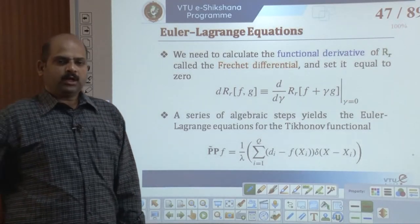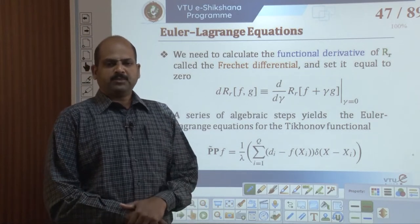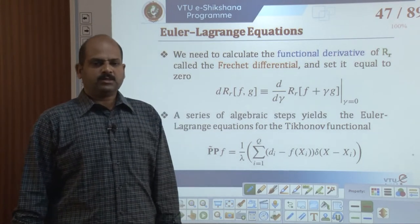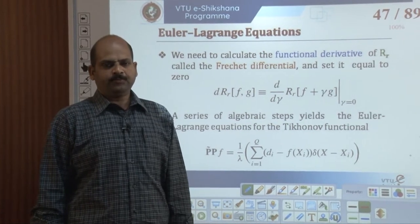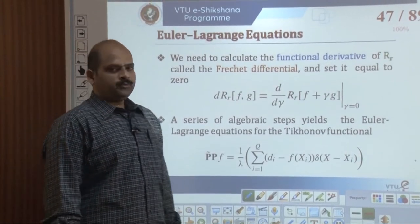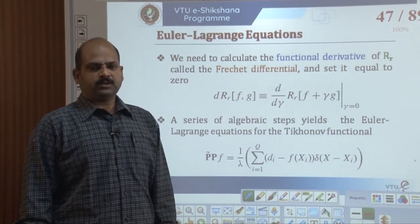Welcome to VTU E-Sectioner E-Learning Centre. In this video, we are going to see the continuation of module number 3 of artificial neural network. In yesterday's class, we came across the Euler-Lagrange equations to find the approximating function f that maximizes the Lagrange equation. We need to calculate the functional derivatives of this particular value using differentials and set it to zero, in the spirit of the extremization procedure for a simple function.